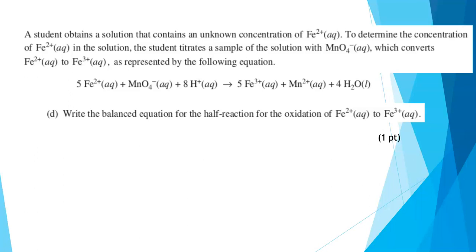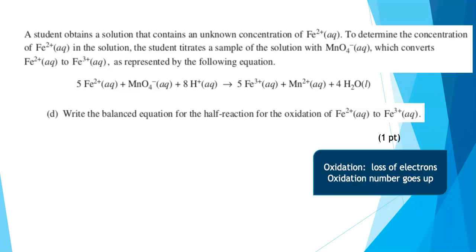Write the balanced equation for the half reaction for the oxidation of iron 2 plus to iron 3 plus. This was scored out of one point, pretty much all or nothing. What you have to remember here is that oxidation is a loss of electrons, so the oxidation number goes up. You're already told in the balanced equation that iron 2 is a reactant, and iron 3 is the product. Our balanced equation is that iron 2 plus will make iron 3 plus and an electron. You have to have that written down. So we're showing conservation of both mass and charge. The sum of the charges is the same on both sides, and that's a check for yourself to make sure you've written the equation correctly.